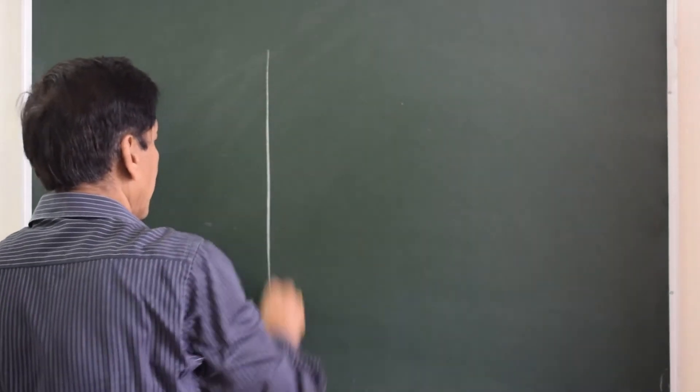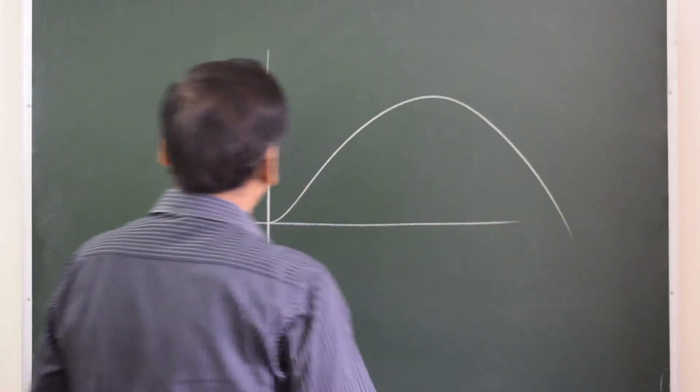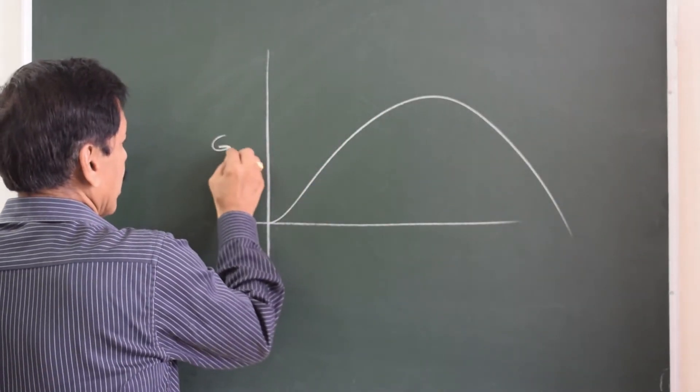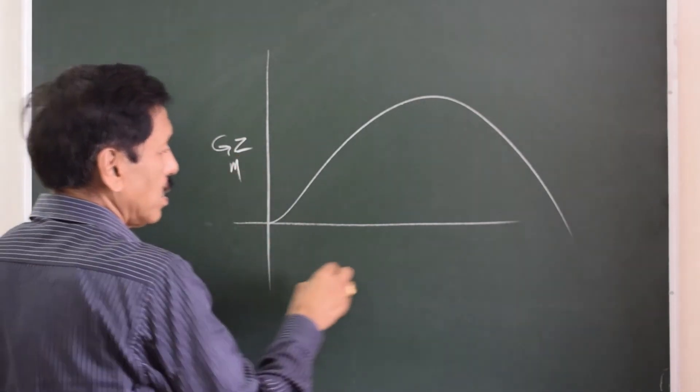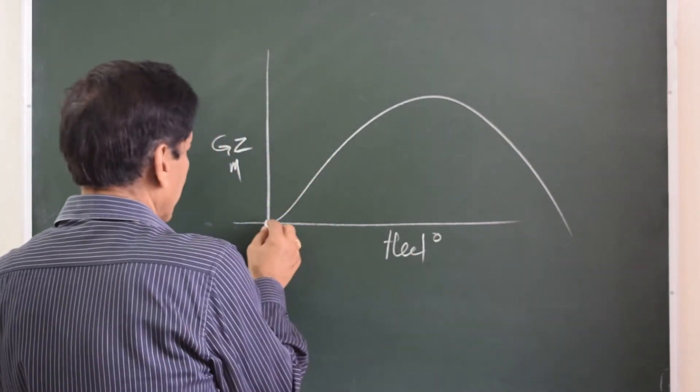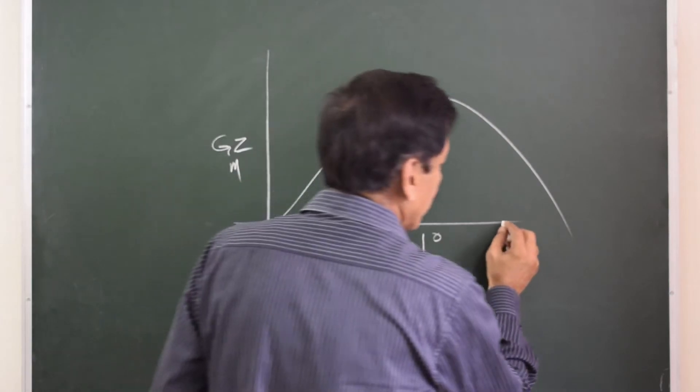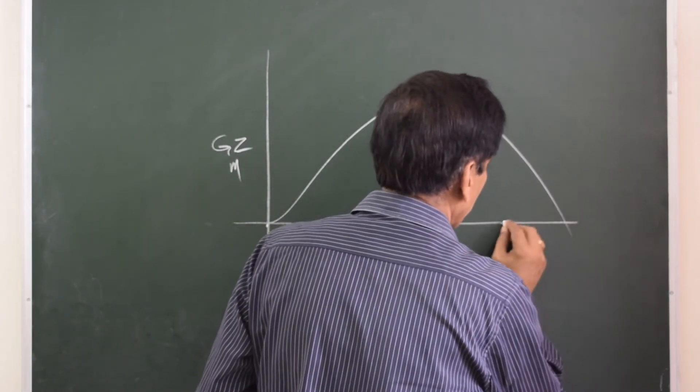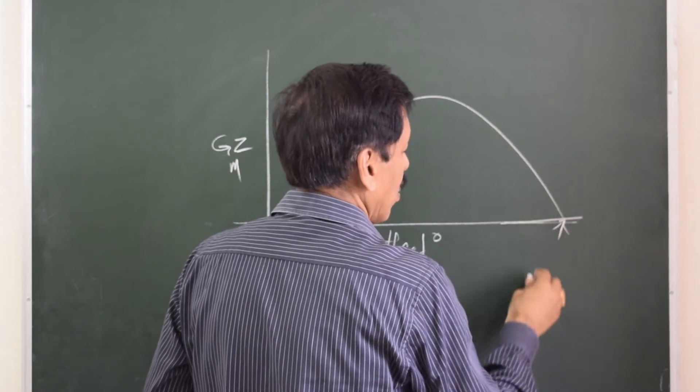So the GZ curve normally would appear like this for a ship. This is the y-axis representing GZ in meters, this is heel in degrees. This is zero degrees, and here where the curve meets the x-axis once again may be called as angle of vanishing stability.